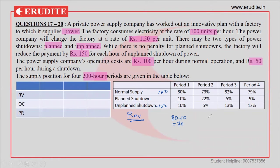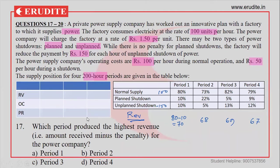Comparing these revenue values: 70, 68, 69, 67 — the highest is 70, which corresponds to Period 1. Therefore, the answer to the first question — which period produced the highest revenue — is Period 1.